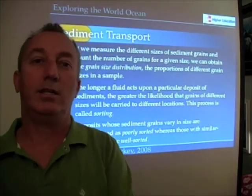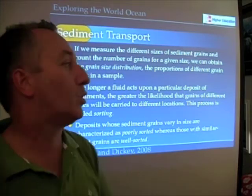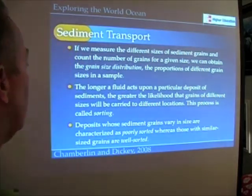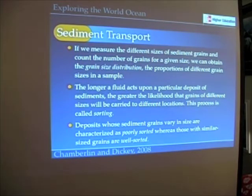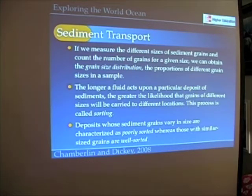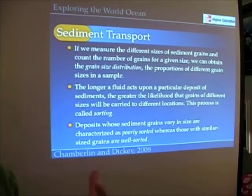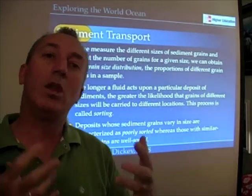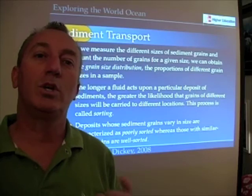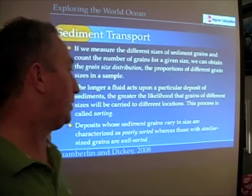Sorting is just like you might do sorting your laundry — you sort it into the socks, and the undies, and the shirts, and the shorts. So where we find sediment deposits whose sediment grains vary in size — so we have lots of different sediment grain sizes — those are poorly sorted. If we find sediment samples with sediments all of a very similar size, we call that sample well sorted.